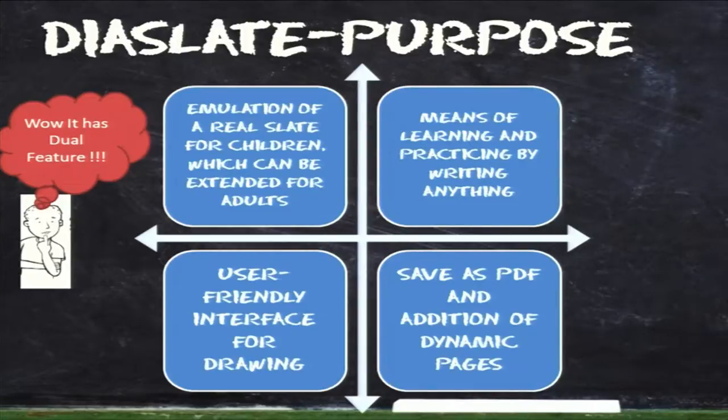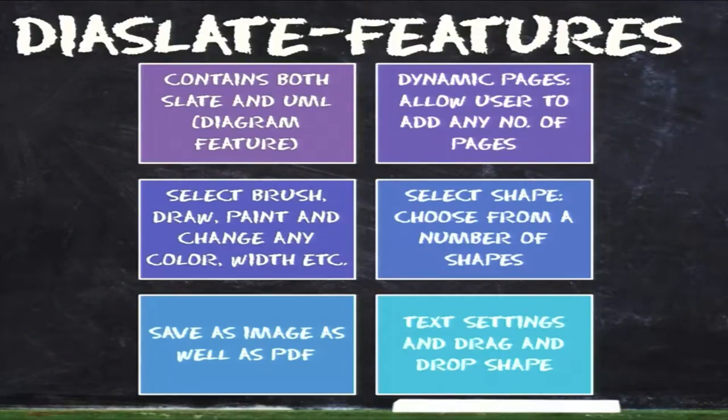The purpose of Dyer Slate: while creating this application, what we wanted to do was create the digital equivalent of a real-time slate. In addition to just drawing and erasing, we also added the feature of drawing UML diagrams. Although the UML part of this application is just a prototype, we've included as many features as possible. Dyer Slate, as the name suggests, consists of two important parts: the slate part and the UML diagrams.